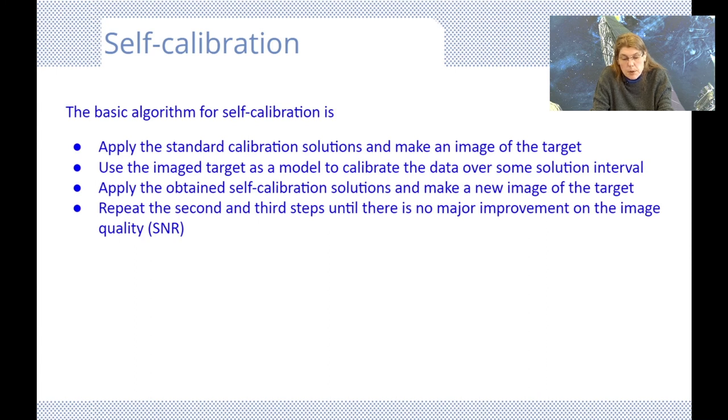Use the imaged target as a model to calibrate the data over some time solution interval. Apply the obtained self calibration solution and make a new image of your target. Repeat the second and third steps until there is no major improvement in your image quality or SNR. In general, we find self calibration improves the RMS noise in the final image.